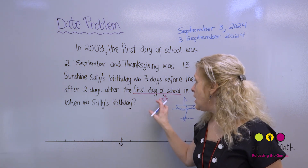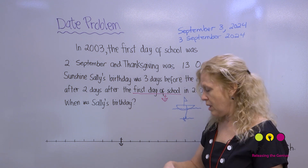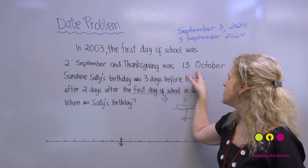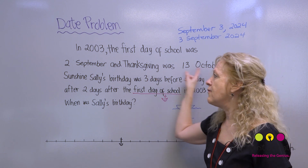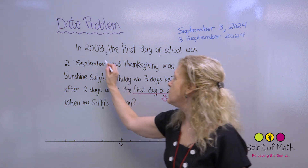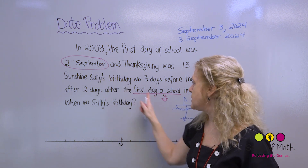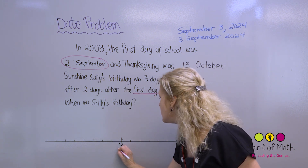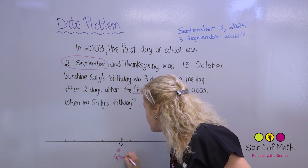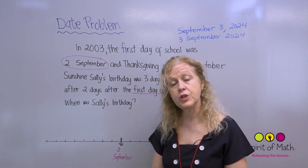The anchor is basically where you know where to start — and that starting point is the first day of school. Now you have to figure out what the first day of school actually was. Looking back at the problem: in 2003, the first day of school was the 2nd of September. We don't want Thanksgiving — we want the first day of school. So that is our anchor date: the first day of school is the 2nd of September.